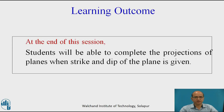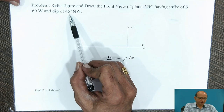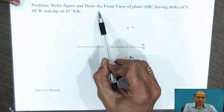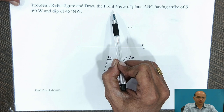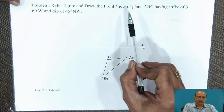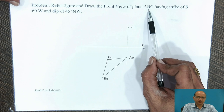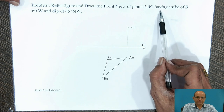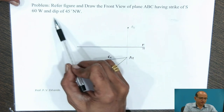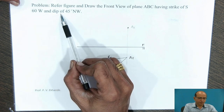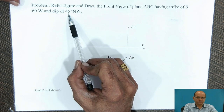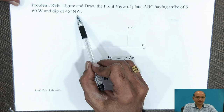At the end of this session, the students will be able to complete the projections of a plane when strike and dip of the plane is given. We have to complete the front view — that is the completion of projection of plane ABC — for which the strike is given as South 60 West and the dip of the plane is 45 degrees, north westerly.